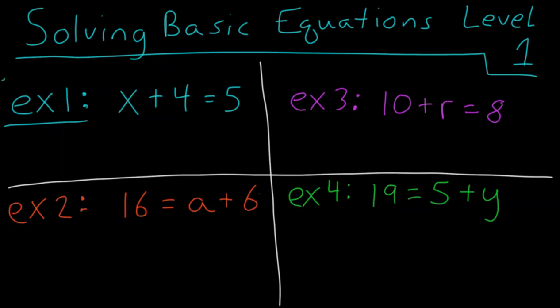Now, for example 1, we see x plus 4 equals 5, and we want to solve for our variable x. So what you have to do here is ask yourself, what is the opposite of plus 4? And most of you know this, the opposite of plus 4 is, of course, minus 4.